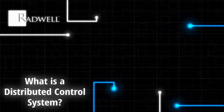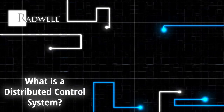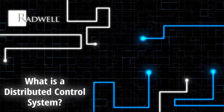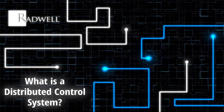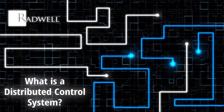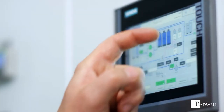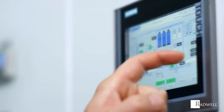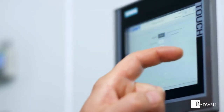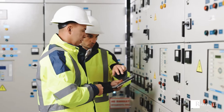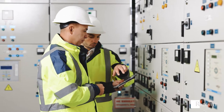What is a distributed control system? A distributed control system is a system of sensors, controllers, and associated computers that are distributed throughout a plant to provide control for a process system.